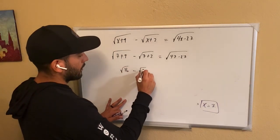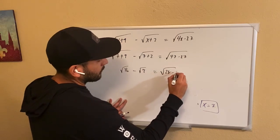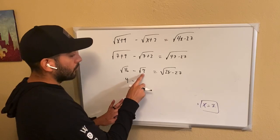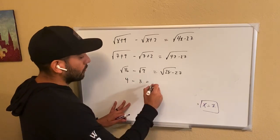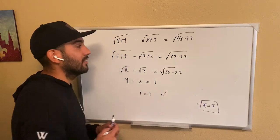On this side, you have root 16 minus root 9 is equal to root 28 minus 27. Root 16 is 4 minus root 9 is 3 equals 28 minus 27 is root 1, which is just 1. So 1 equals 1. Yeah buddy, that's exactly what we want.